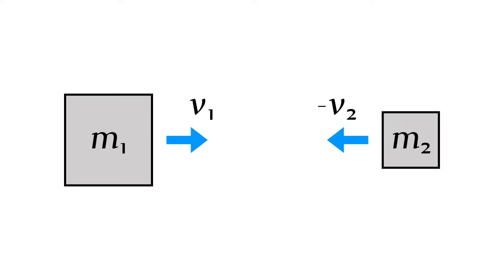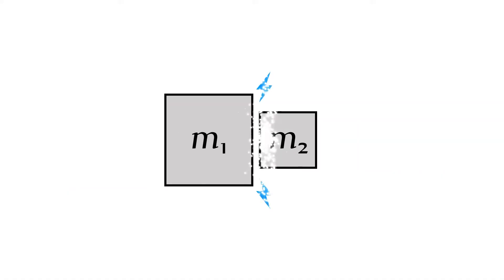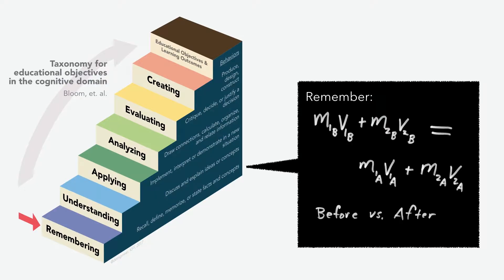The topic is linear momentum. Here's the setup: Object 1 is twice the mass of Object 2 — they collide. We want our students to learn about this interaction on multiple levels. We might simply want to assess the student's ability to remember a related equation. It's a low bar, but sometimes that's all that's needed.